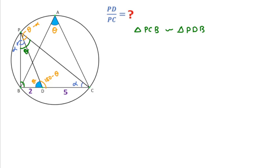Now using similar properties, we can write PC over PD equal to BC over PB. Let's suppose this is the first. And we can also write PC over PD equal to PB over BD using similar properties. Let's suppose this is second.